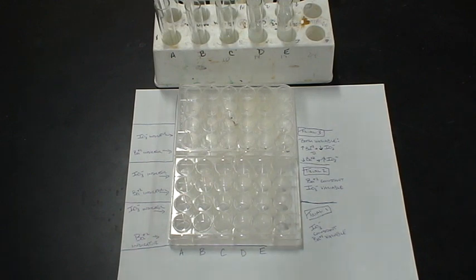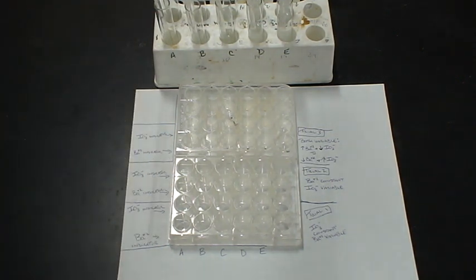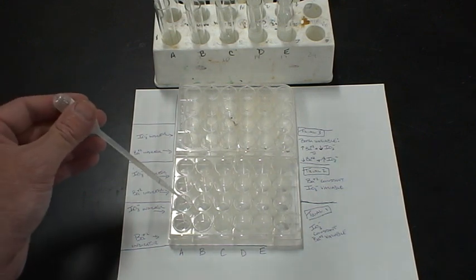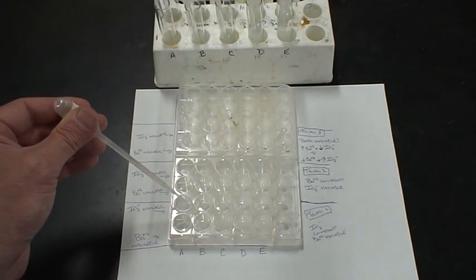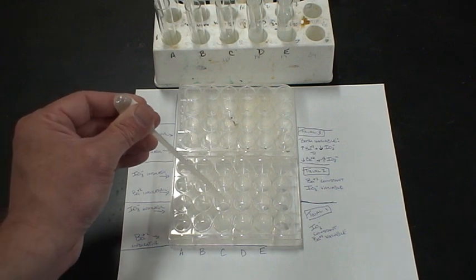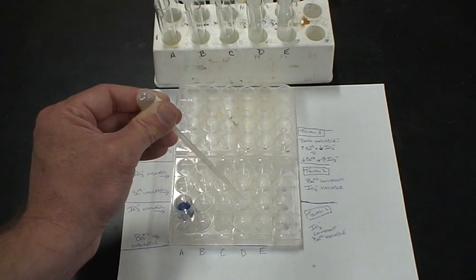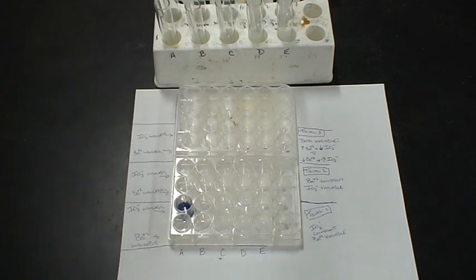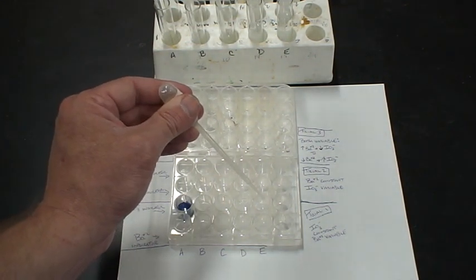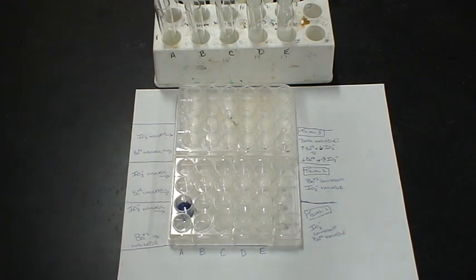Now we have a solution of sodium bisulfate with a combination of starch in there. We're going to add five drops to that one, and this is going to serve as my iodate indicator. Five drops to each of those wells.